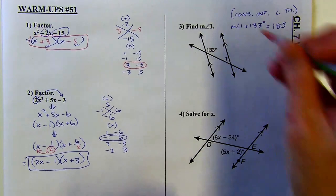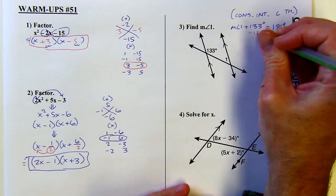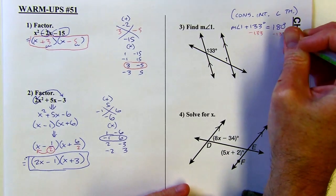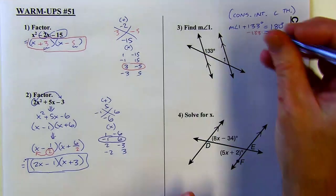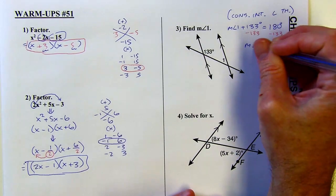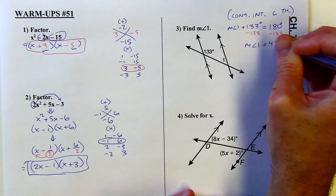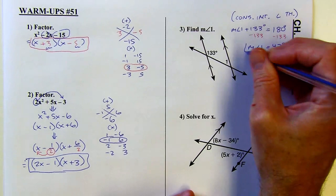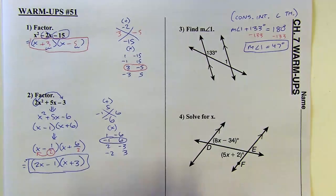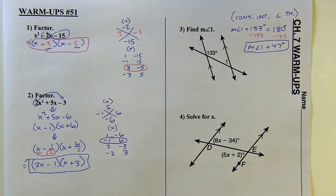And then let's just solve that. So I'm just subtracting 133. And that's going to come out to 47. So the measure of angle one would be 47 degrees. Make sure you have the degree symbol in your final answer because you want to say what units you're using to measure that angle.